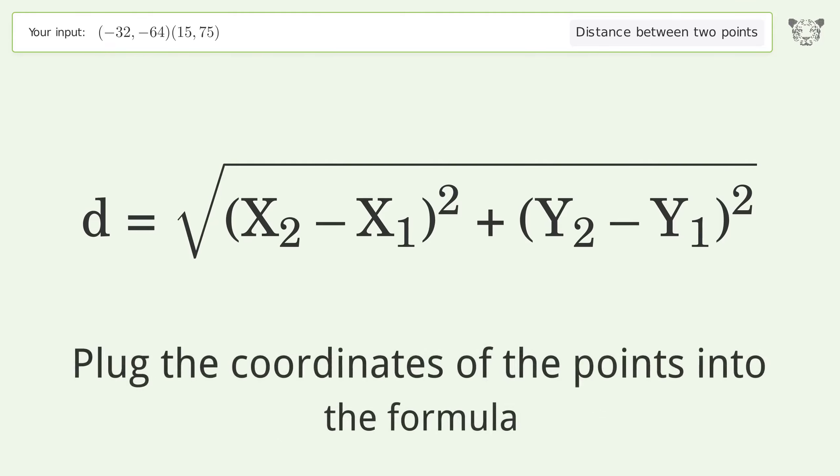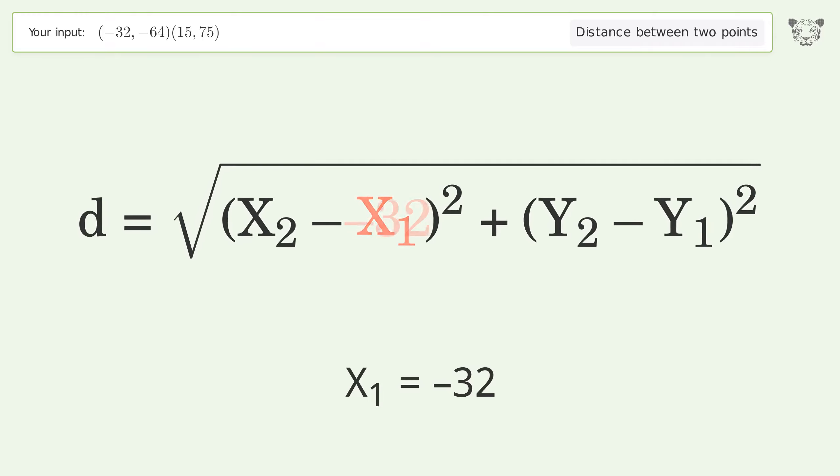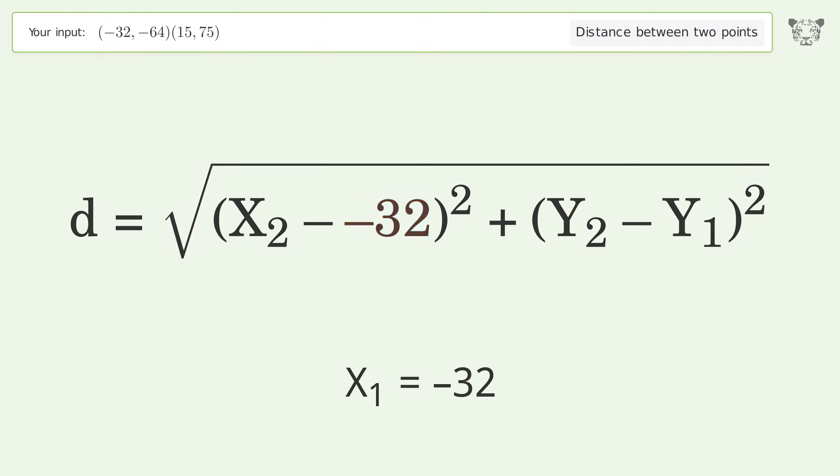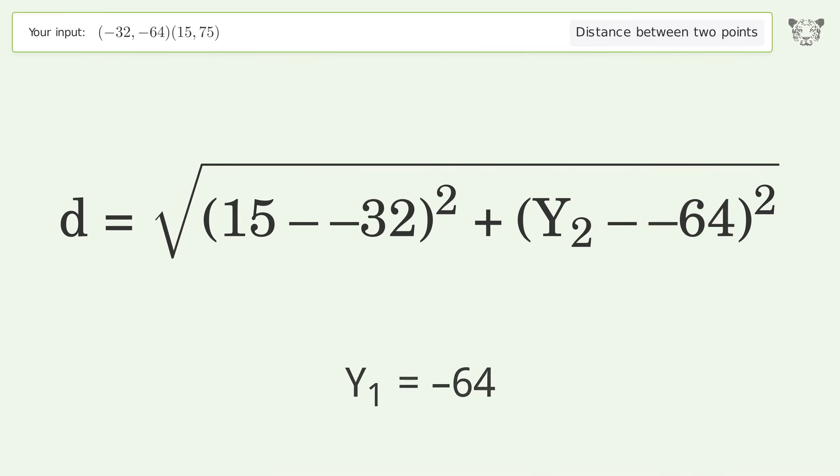Plug the coordinates of the points into the formula: x₁ = -32, x₂ = 15, y₁ = -64, y₂ = 75.